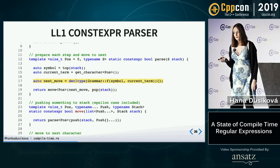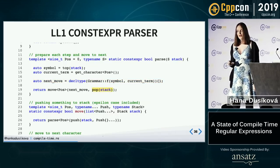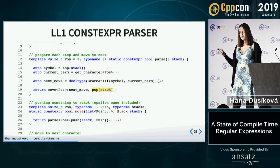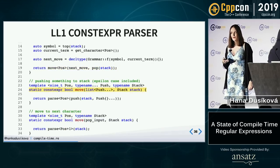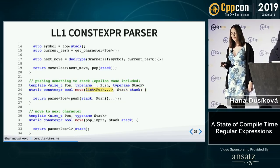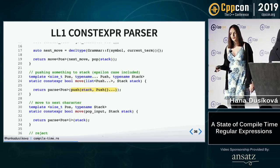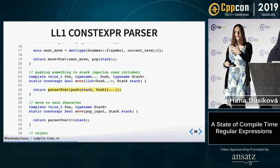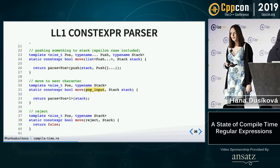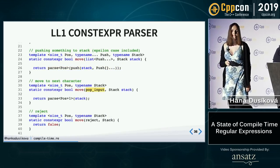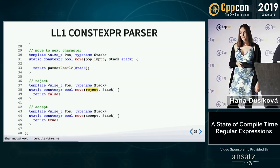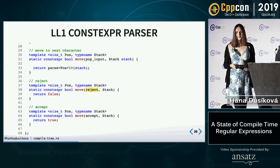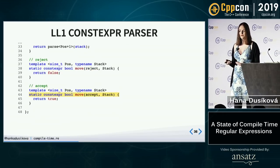I call function move with the new stack and current move. That is another overloading resolution which takes the stack and list of symbols to push, calls function push on the stack, and calls parse again recursively. Same thing for popping input — just move to the next position. If the action is reject, I return false. If accept, I return true.